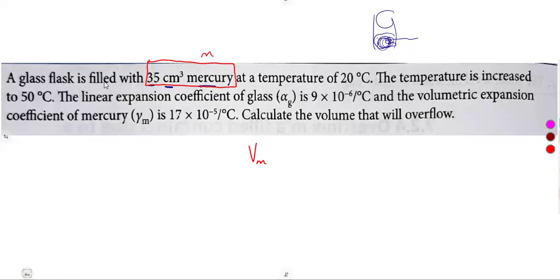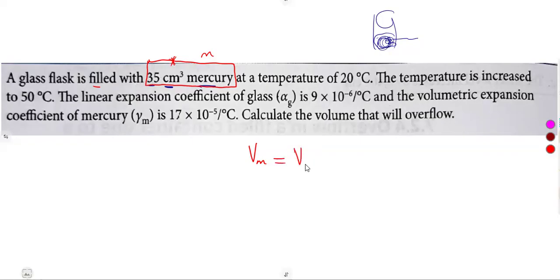The problem says the flask is 'filled,' not 'filled up.' When they say 'filled up,' it means the mercury reaches the top and the volume of mercury equals the volume of the container. But in this case, it could be filled to half or three quarters — we do not know, they do not mention. So 35 cm³ is simply the original volume of mercury given. We are not given the volume of the container.